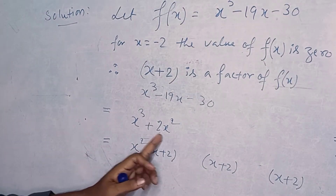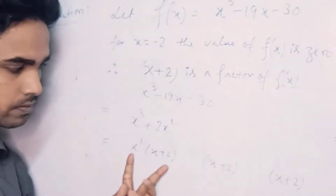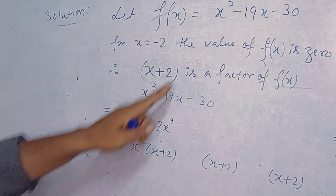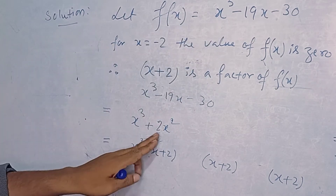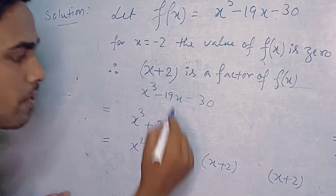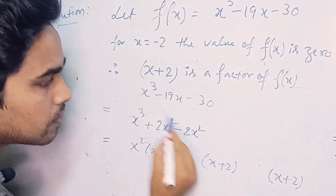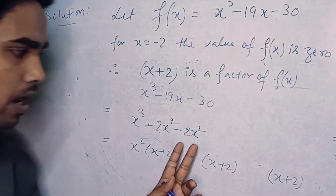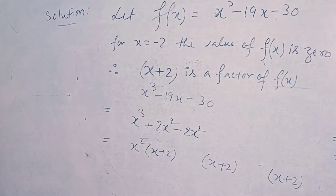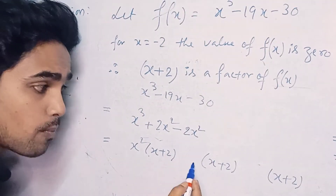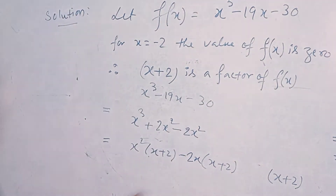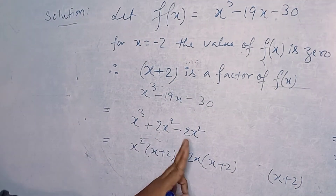This 2x squared came from x squared into 2. Now we have to adjust this 2x squared, because in the question there is no term with x squared. So we deduct it by writing minus 2x squared. We have taken minus 2x as an additional term, so minus 2x into x gives minus 2x squared. We got it.